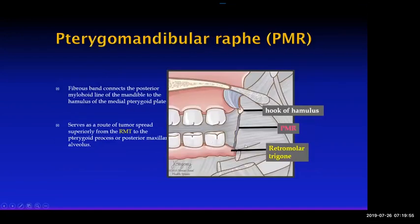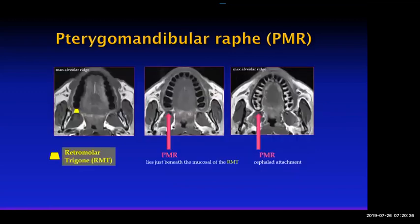The pterygomandibular raphe is a fibrous band connecting the mylohyoid line of the mandible to the medial pterygoid plate. It serves as a route of spread of cancer from the retromolar trigone to the maxilla — cancer can travel along this raphe. On imaging it's hard to see directly, but you can estimate its location. This is the expected attachment area of the pterygomandibular raphe.